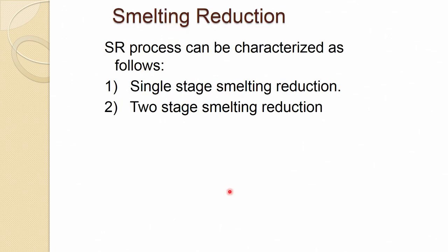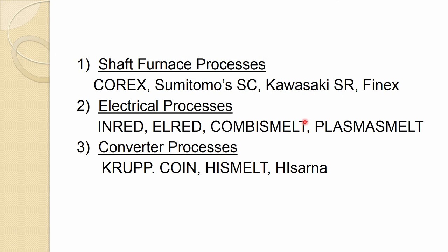Smelting reduction processes can be characterized as either single-stage or two-stage smelting reduction. Single-stage processes include the shaft furnace process, COREX, Sumitomo, Kabasuki, and electric arc-based processes — these are the main smelting reduction processes.